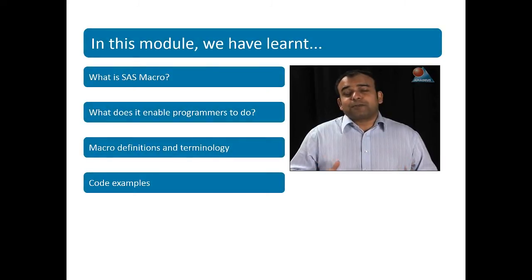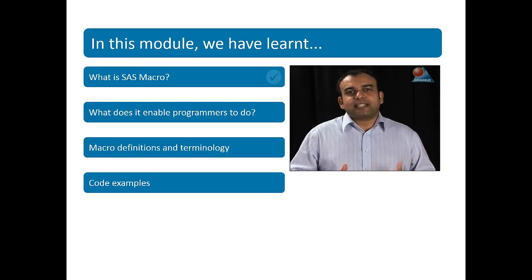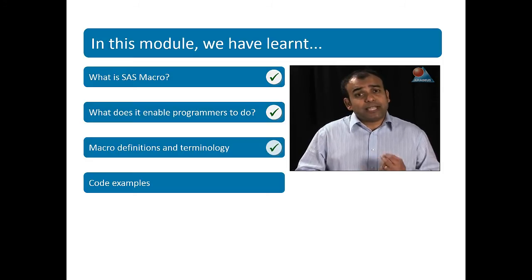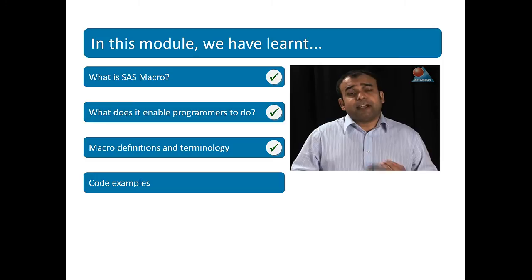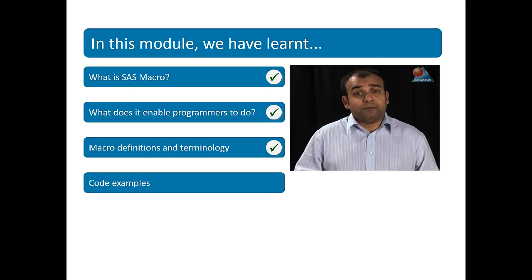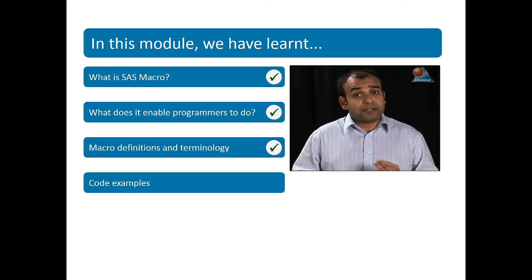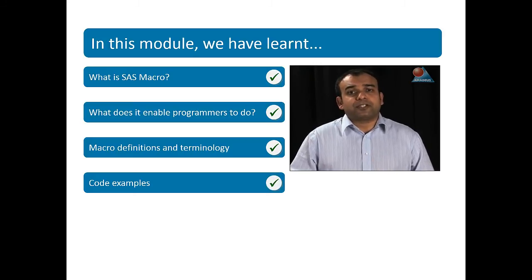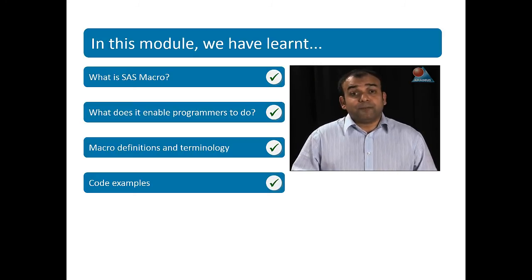This module has provided a general introduction to SAS Macro Language and demonstrated some of the benefits it can provide. As we have seen, Macro Language consists of two key components, macro variables and macros, and these have been defined alongside the two key delimiters that allow us to work with them, the ampersand and the percent sign. Common applications of using Macro Language to solve day-to-day coding problems have also been explored.